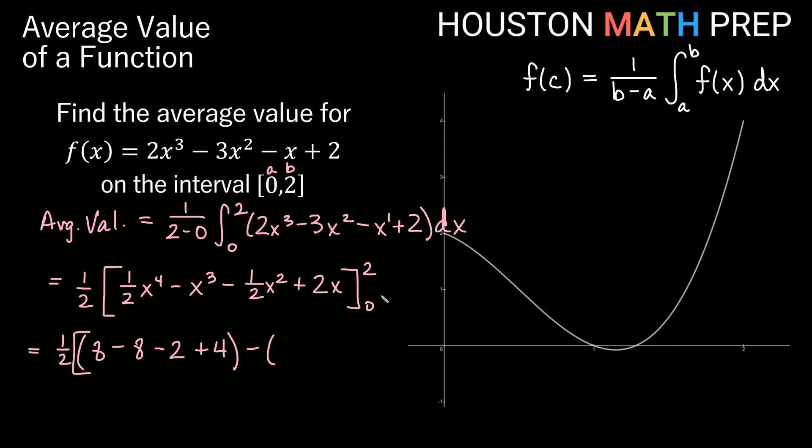Now minus, when we plug in 0, notice if we plug in 0 to each of these, we're going to get 0 for every single term, so we just get 0 for everything that we plug in there. And what do we get? Well, we get 1/2 times 8 minus 8 is 0. And then negative 2 plus 4 gives us 2. So it actually turns out 1/2 times 2 gives us 1.